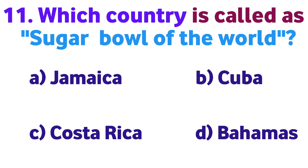Question number eleven: Which country is called the sugar bowl of the world? Option A: Jamaica, B: Cuba, C: Costa Rica, D: Bahamas. Correct answer is B: Cuba.